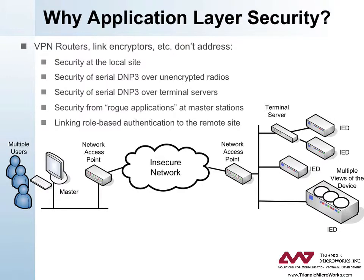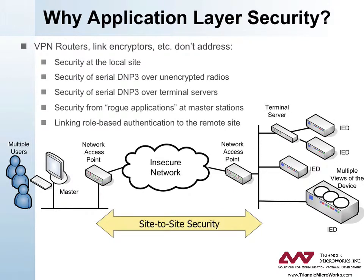There are three types of security that are commonly deployed in communication networks today. Site-to-site security includes the use of Virtual Private Network (VPN) routers and protocols such as IPsec to secure the link between two locations — for example, a corporate office and a home office, or a master station and a substation. It does not secure the networks at those two locations, and physical security measures like locks and guards are necessary to protect them.